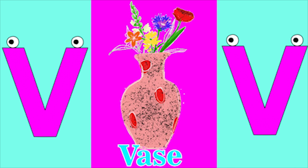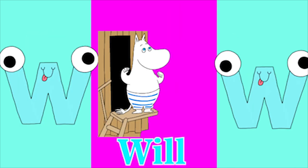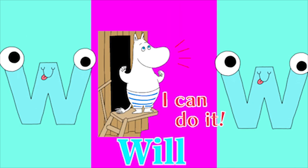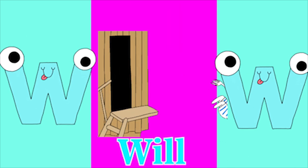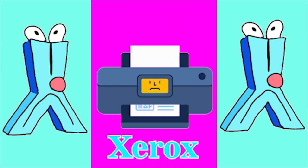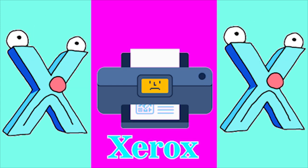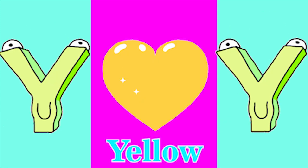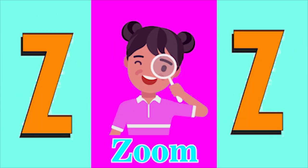V for vase, W for whale, X for zero, Y for yellow, Z for zoo.